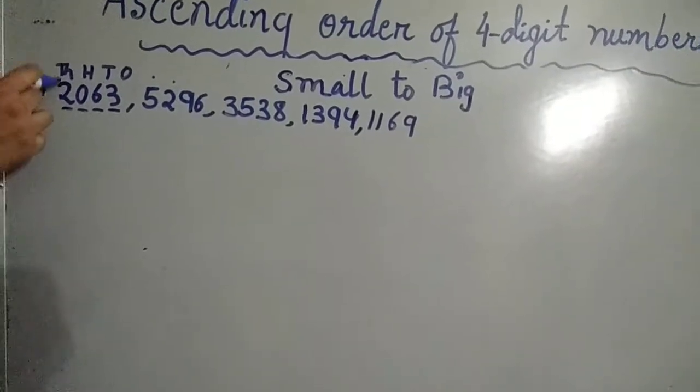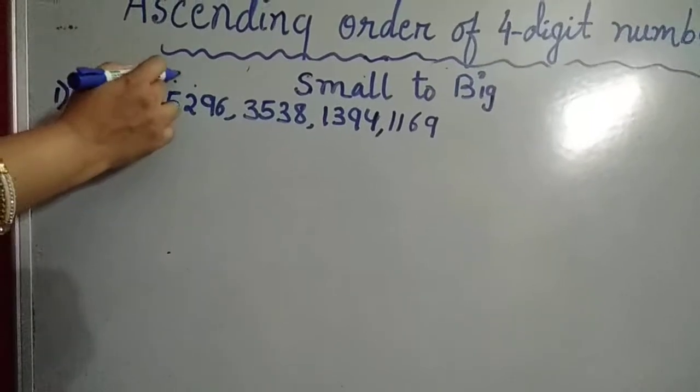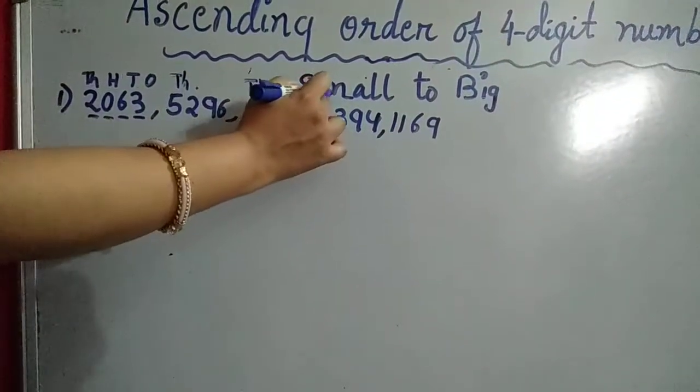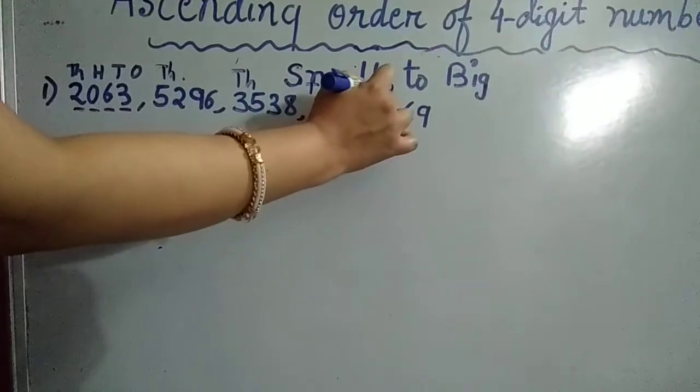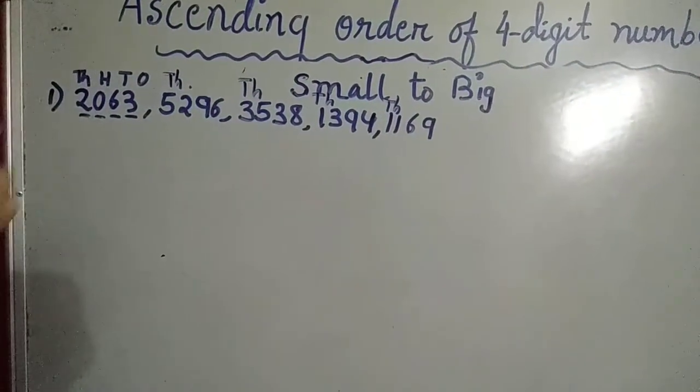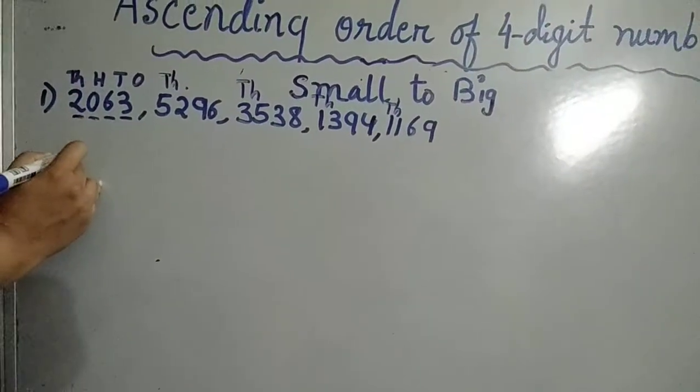Now the first digit is in the thousands place. So we have to compare the digit in the thousands place. We will take out the digits in the thousands place.